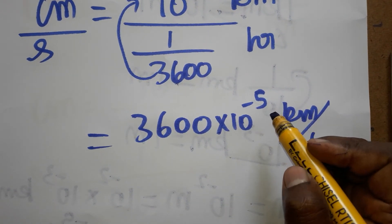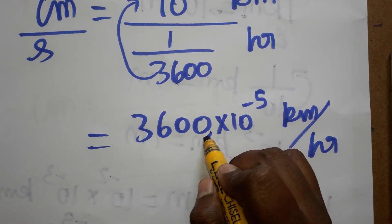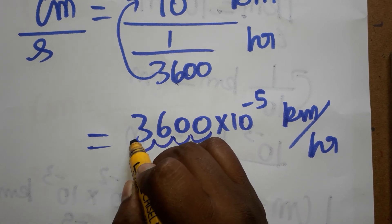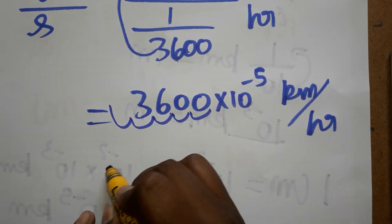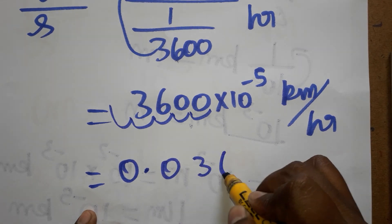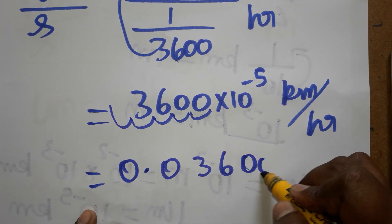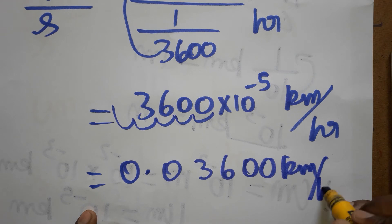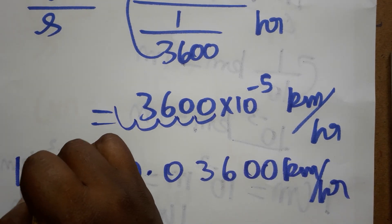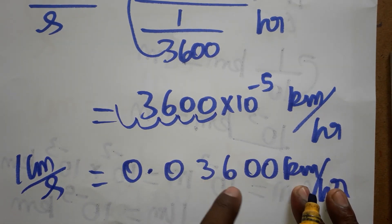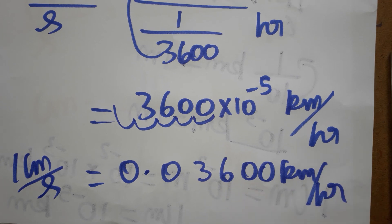Since 10^-5 is there, we move the decimal 5 places: 0.036000 kilometer per hour. So 1 centimeter per second is equal to 0.036 kilometer per hour. Thank you for watching.